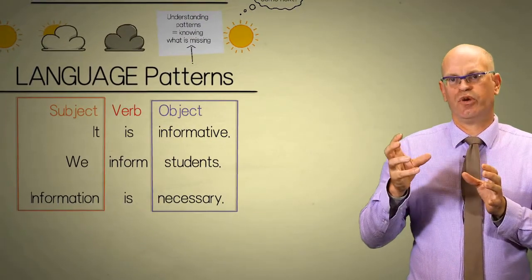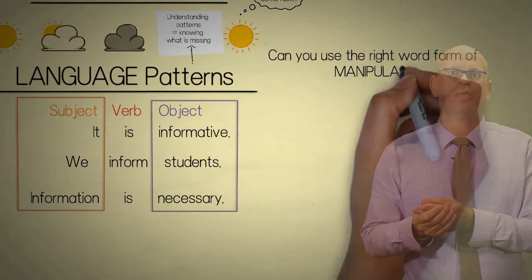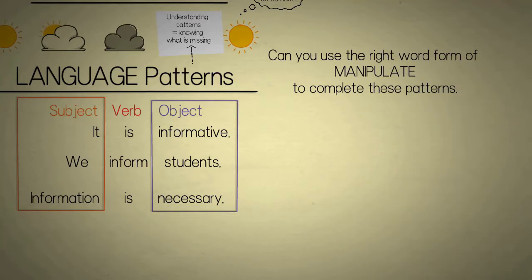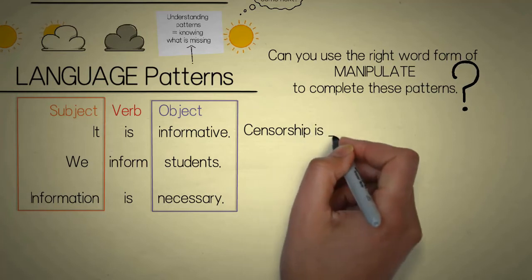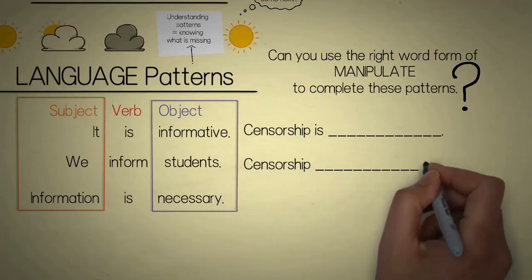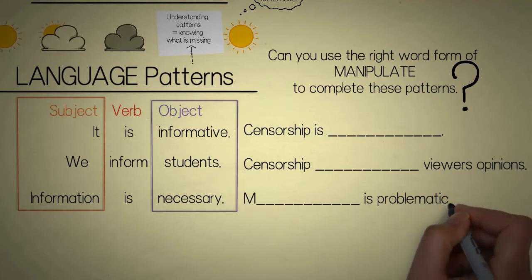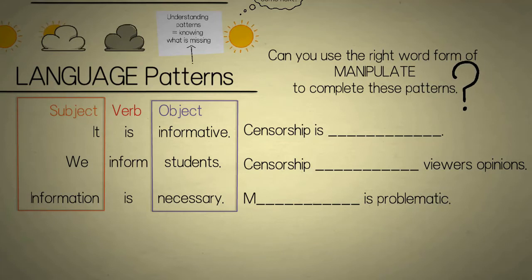Let's practice that pattern with some new vocab items. These are vocab words that my students have learned recently in the topic that we're studying. The two words that they have been practicing and learning are manipulate and censorship. But let's focus on manipulate. The first thing to think about is what might be the different word forms of manipulate. Here's a clue: look at inform and information. It's very similar to that.